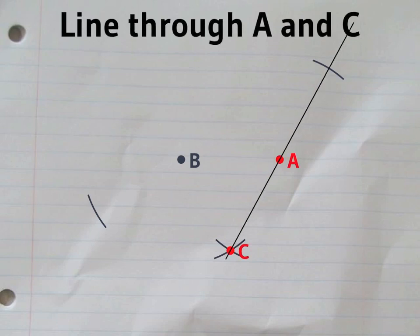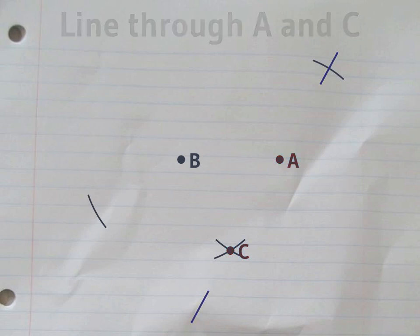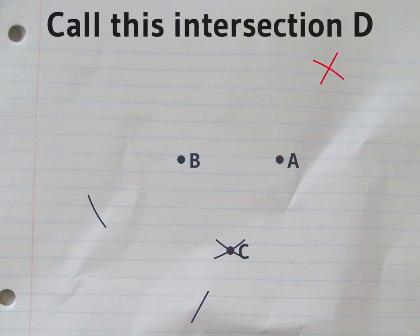Then we can draw a line through A and C. That line gives a new intersection point. We'll call it D.